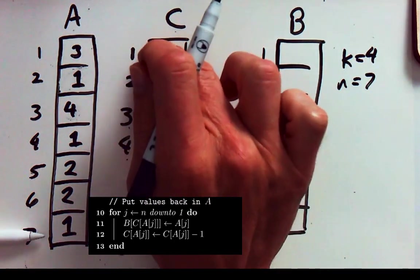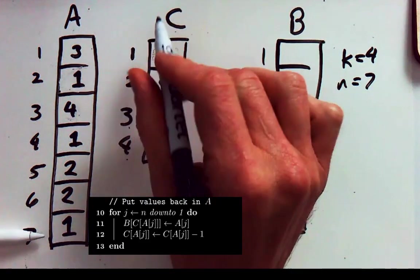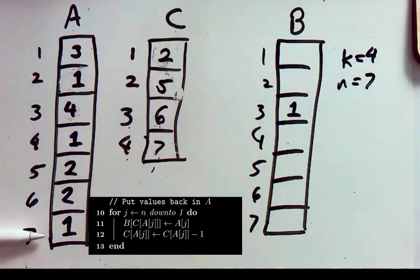But then we have to update this. We've placed a 1. So the next time we place a 1 it's going to go before the one we just put down. Then we'll back up in our A array. We'll get our next value. We've got a 2.